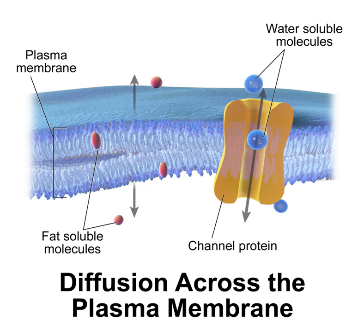It wasn't until later studies with osmosis and permeability that cell membranes gained more recognition. In 1895, Ernest Overton proposed that cell membranes were made of lipids. The Lipid Bilayer Hypothesis, proposed in 1925 by Gorter and Grendel, created speculation about the bilayer structure based on crystallographic studies and soap bubble observations. In 1925, Fricke determined the thickness of erythrocyte and yeast cell membranes ranged between 3.3 and 4 nanometers, a thickness compatible with a lipid monolayer.